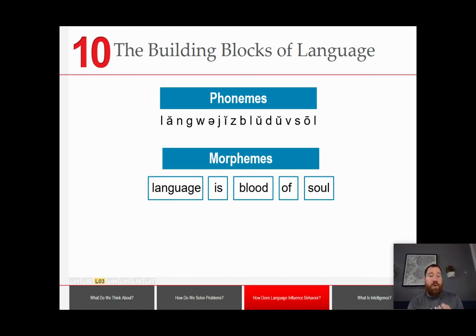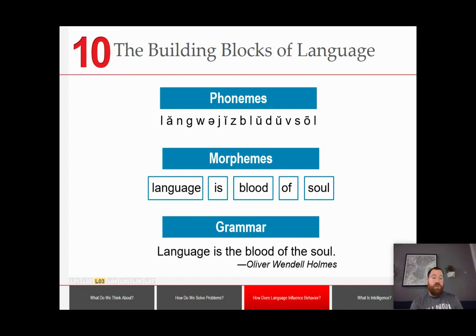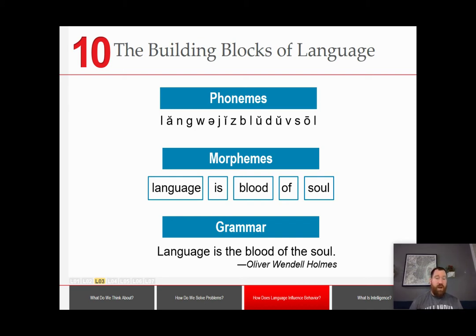So a phoneme is the smallest unit of sound, a morpheme is the smallest unit of meaning, and then grammar provides the rules that we have to combine morphemes into meaningful sentences. These are things like subject-verb agreement, whether the object of a verb comes before or after the verb itself, or adjective placement. In Spanish, adjectives typically go after the noun — so it would be 'coche rojo' instead of 'red car' as we do in English. That's a grammar rule that allows us to understand each other.